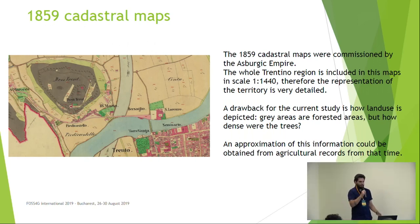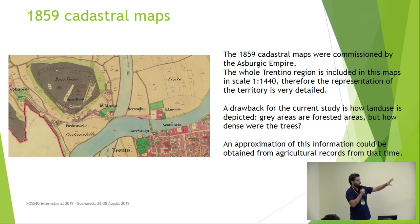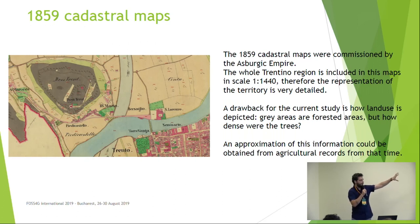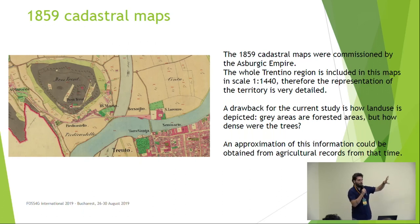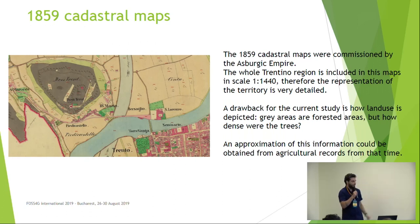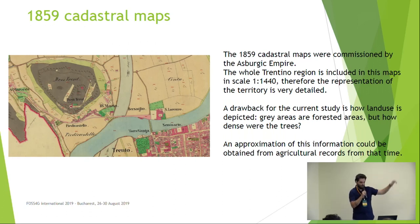These are cadastral maps so each parcel is colored by a background color. For instance, here you can see a detail of Trento city, and the grey spots you can see here usually indicate a forest. This forest is still here in Trento city — of course the city has expanded, but the forest is still there.